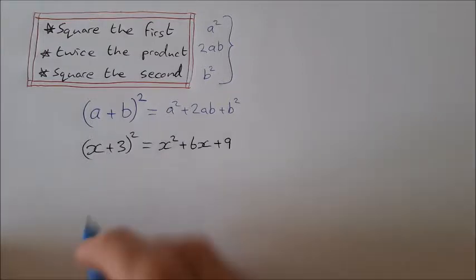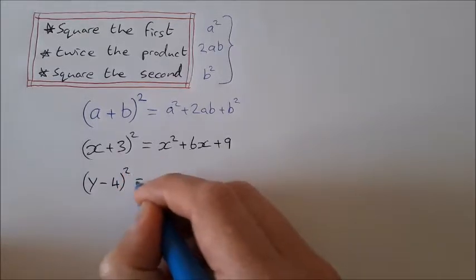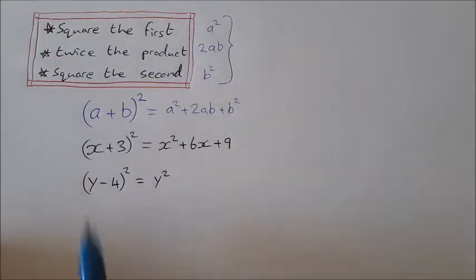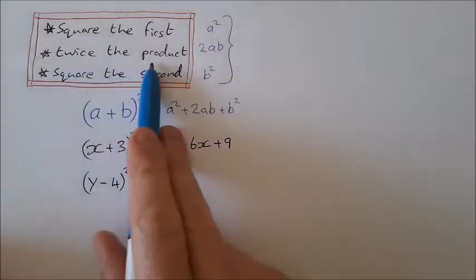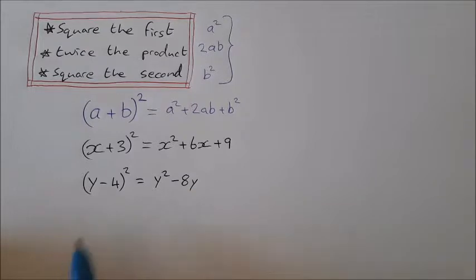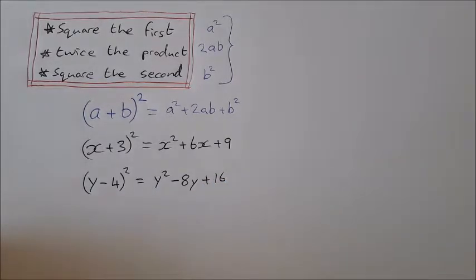Let's try one with a minus: (y-4)². Follow the rules. Square the first, y². Twice the product: what's the product of y and -4? It is -4y. Multiply that by 2, you get -8y. That's twice the product. Square the second, (-4)² is +16. So (y-4)² = y² - 8y + 16. In this one, you really have to be careful of the signs.